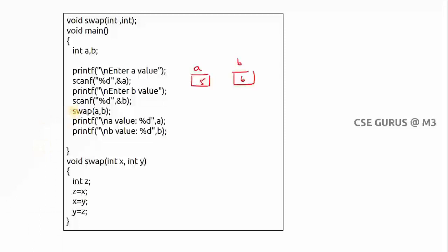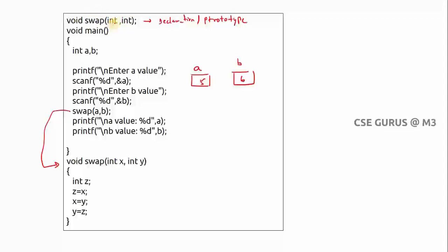When the function call executes, it goes directly to the function definition. After line-by-line execution of swap(a, b), it directly goes to the function where it is defined. Here we have written void swap — this is a user-defined function. This at the top is called a function prototype or function declaration, which tells the compiler that one user-defined function exists inside the program.